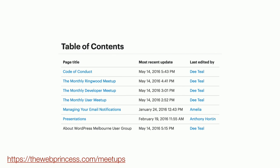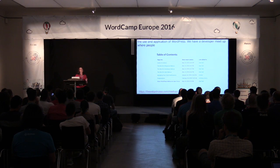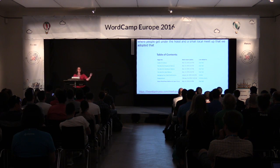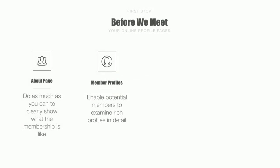We run three meetups a month: a user meetup which focuses less on code and more on the use and application of WordPress; a developer meetup where people get under the hood; and a small local meetup that we adopted that needed some admin support. In our meetup pages we outline details about each of those groups and have our code of conduct so people know what's expected. If you follow the link on the slide, you can download copies of all those templates — I'm assuming WordPress has published my blog post, which was scheduled to go live when I started speaking.